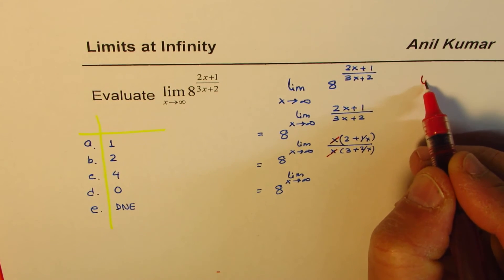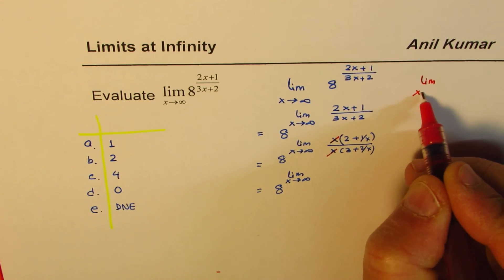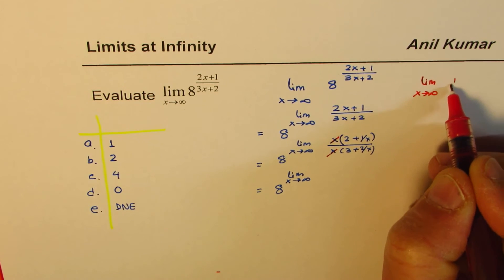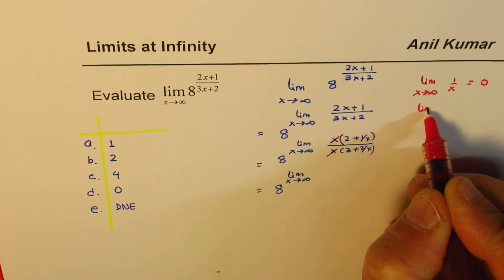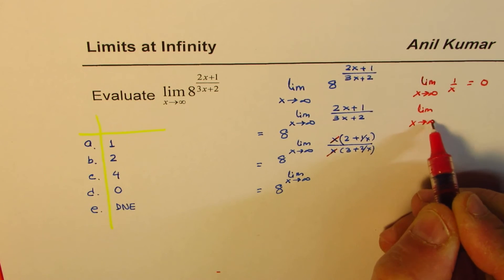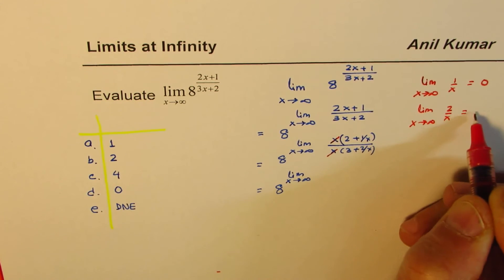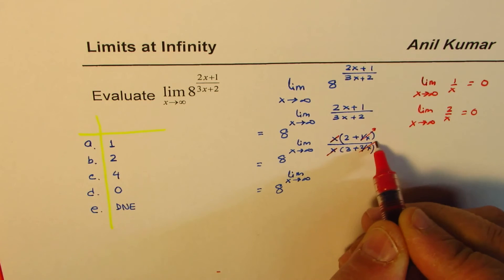So I'm just showing you that limit when x approaches infinity for 1 over x equals 0. Limit when x approaches infinity for 2 over x is also 0. So these two approach 0.